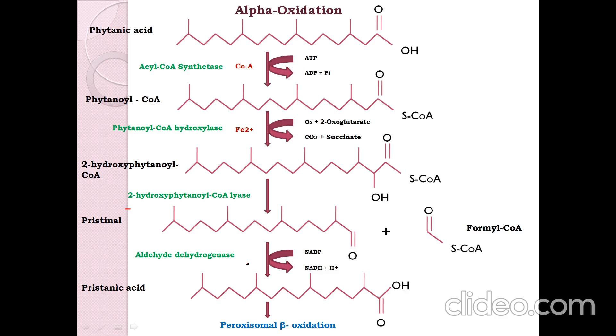Refsum's disease is the only defect in peroxisomal alpha oxidation. This is an autosomal recessive disorder which is due to the deficiency of the enzyme phytanoyl CoA hydroxylase. This leads to weakness, numbness and pain which is due to the nerve damage in hands and feet and it is called as peripheral neuropathy. And ataxia which is because of impaired balance or coordination, and also leads to retinitis which is inflammation of retina, retinitis pigmentosa which leads to damage of retina in the eye, and also abnormalities of skin and bones. Thank you.